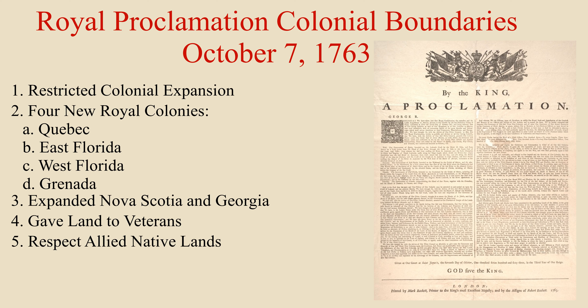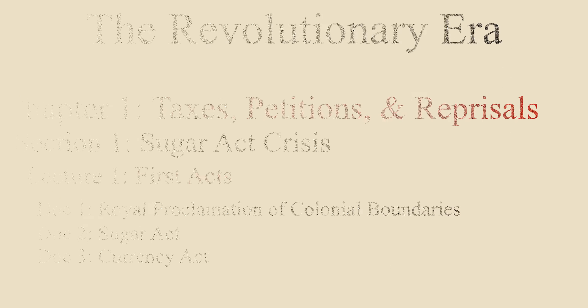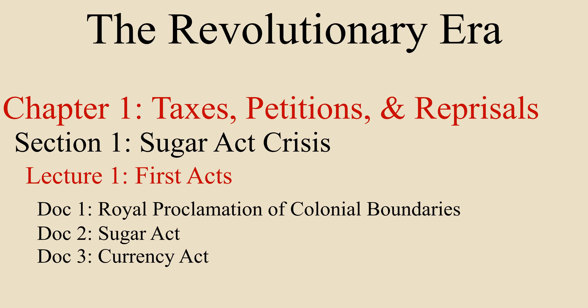The proclamation ends with a general extradition policy, where any criminal who flees from one colony or territory to another will be apprehended and returned to the place of crime to stand trial. This was the first of three significant acts passed by Parliament during this first crisis. The other acts in this crisis are the Sugar Act and the Currency Act of 1764.